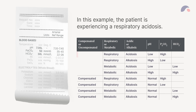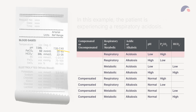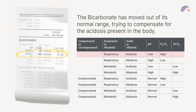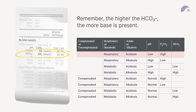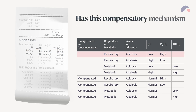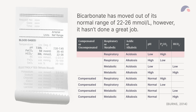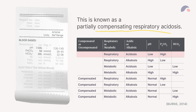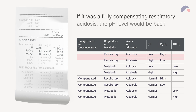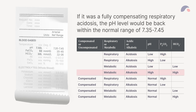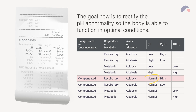In this example, the patient is experiencing a respiratory acidosis, and the bicarbonate has moved out of its normal range, trying to compensate for the acidosis present in the body. Remember, the higher the HCO3 negative, the more base is present. So has this compensatory mechanism been successful? Bicarbonate has moved out of its normal range of 22 to 26 mmol per litre; however, it hasn't done a great job. This is known as partially compensating respiratory acidosis. If it was a fully compensating respiratory acidosis, the pH level would be back within the normal range of 7.35 to 7.45. The goal now is to rectify the pH abnormality so the body is able to function in optimal conditions.